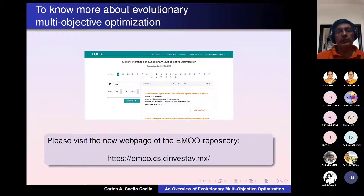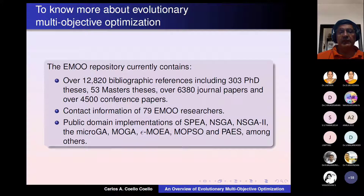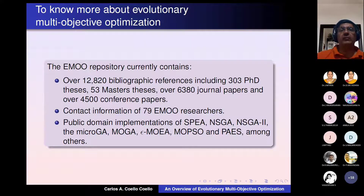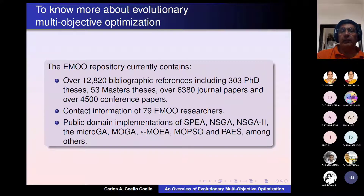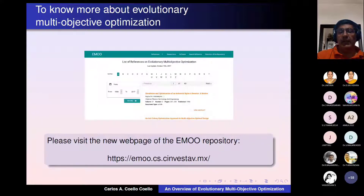For more information, visit the EMO repository webpage, which contains nearly 13,000 bibliographic references including more than 300 PhD theses, contact information for EMO researchers, and source code for a wide number of algorithms. Platforms include Platemo in MATLAB with more than 100 implemented algorithms, and other platforms available in Java, Python, C, and C++—all free to use. Thank you again for the invitation, and I'm open to any questions.